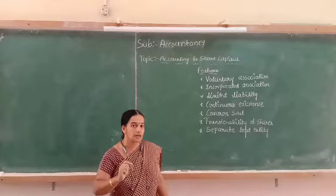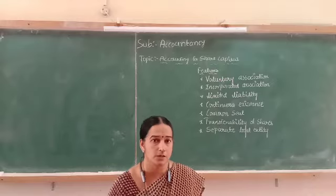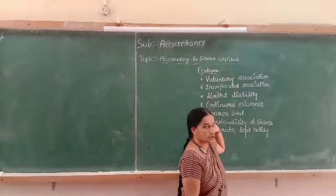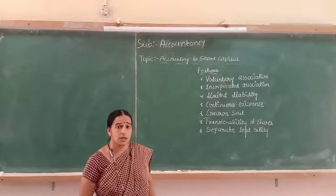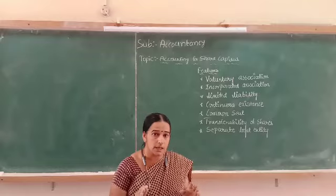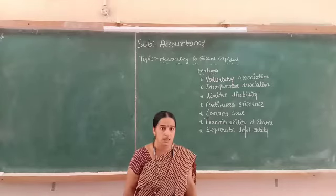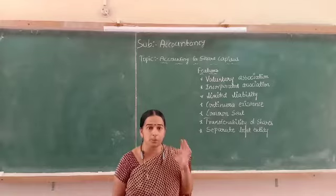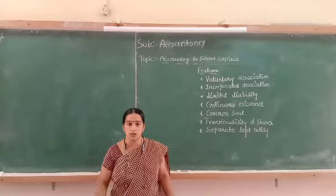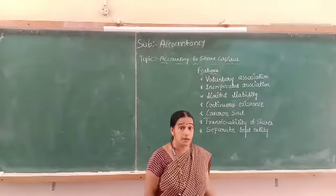Let me explain the features of joint stock company. The first feature is that it is a voluntary association. Voluntary association means the members voluntarily become shareholders of the company. No one will be compelled to purchase its shares. With our own interest, we are purchasing the shares of different companies. So it is a voluntary association of many persons.